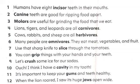Number five: cows, rabbits and sheep are all herbivores. Number six: many people are omnivores — they eat meat, vegetables and fruit. Number seven: use sharp knives to slice through the tomatoes. Number eight: you can grip things with your hands and your teeth. Number nine: let's crush some ice for our sodas.